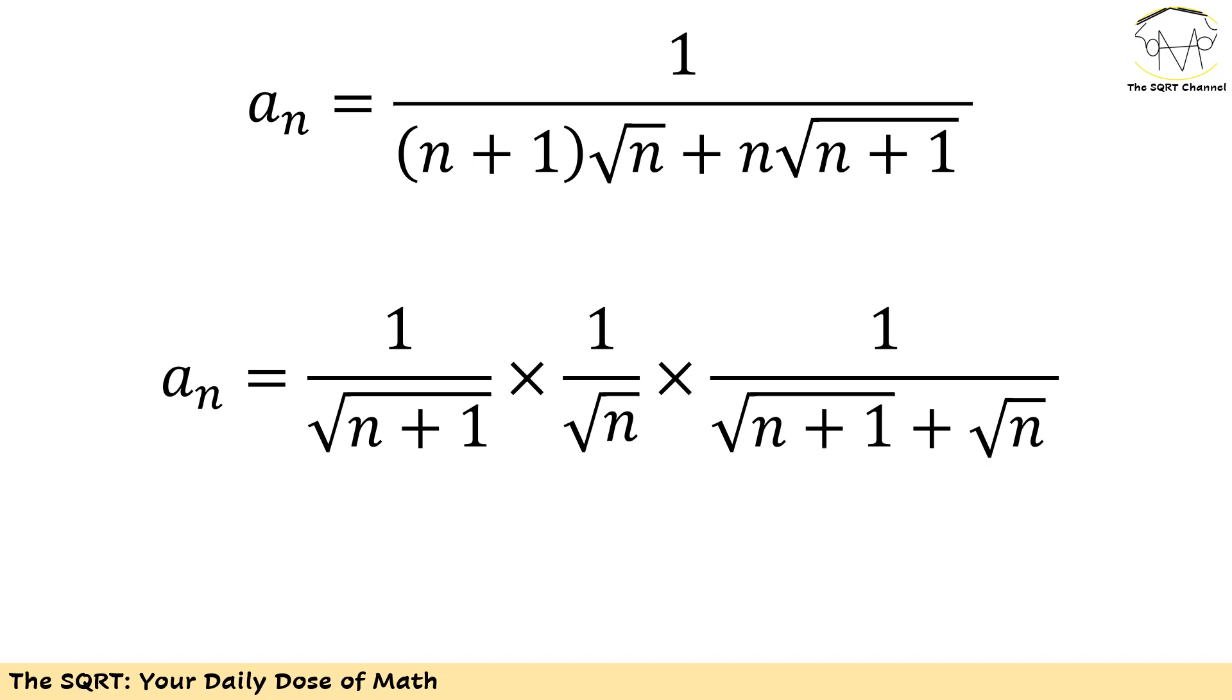Because of that I'm going to factor out 1 over √(n+1) and 1 over √n. If I do this then for the first term in the denominator I'm going to end up with √(n+1) and for the second term I'm going to end up with √n.